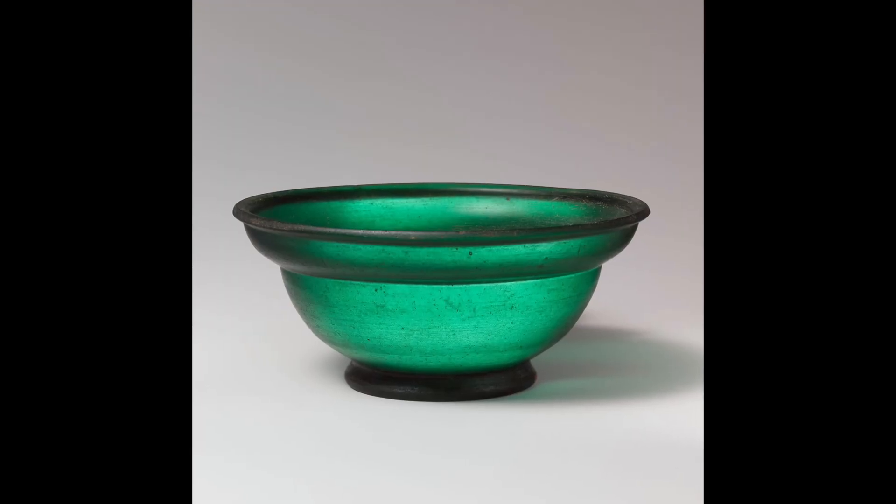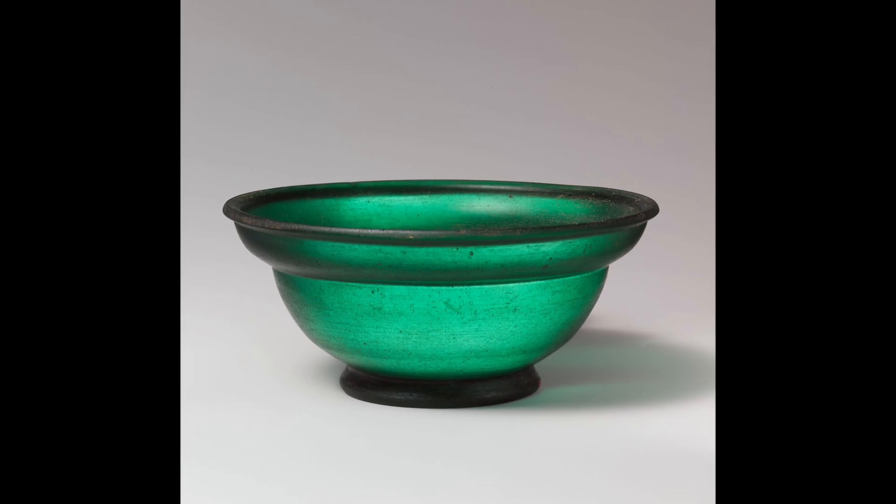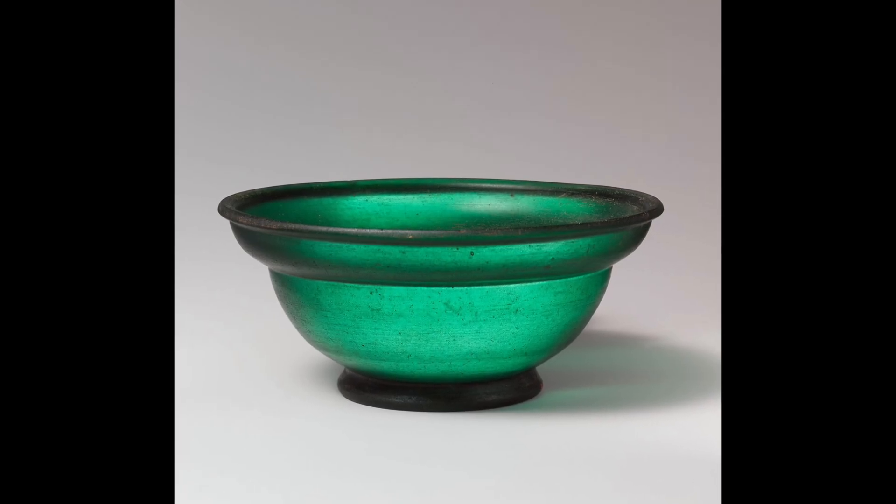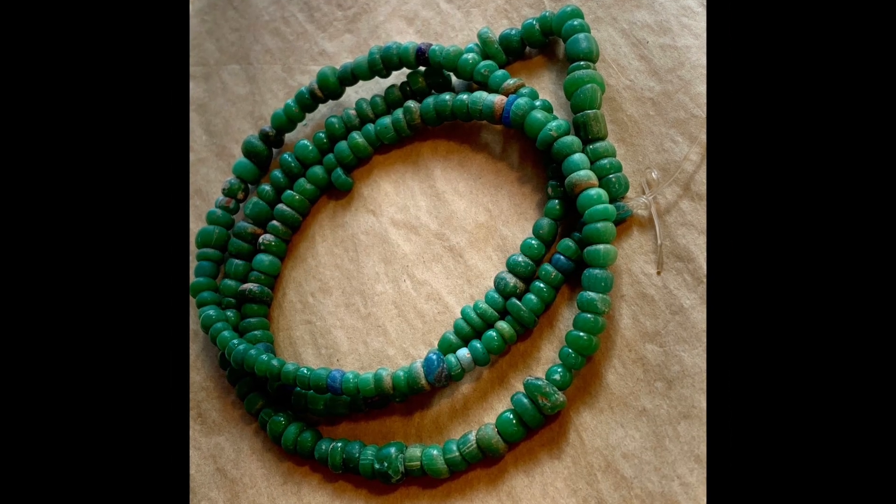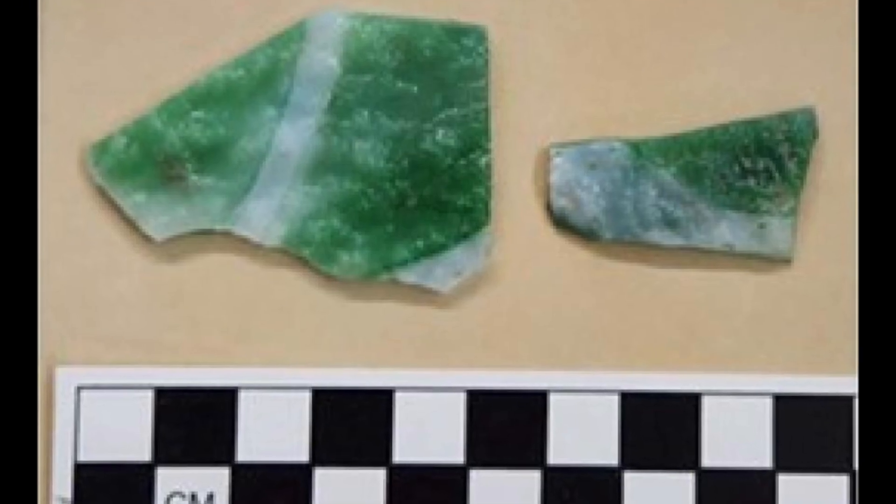Early glass wasn't the crystal clear material we know today. It was cloudy, with a greenish tint caused by iron impurities, but it could be shaped, cast into beads, molded into small vessels, even pressed into decorative tiles.